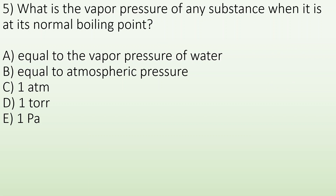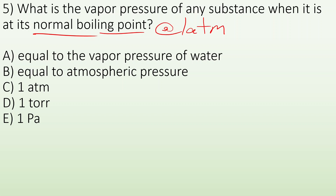Number five: what is the vapor pressure of any substance when it's at its normal boiling point? The normal boiling point is at one atmosphere of pressure — that is the definition. So the vapor pressure at its normal boiling point has to be one atmosphere.